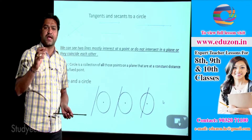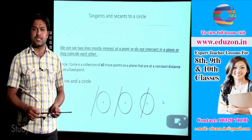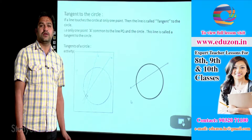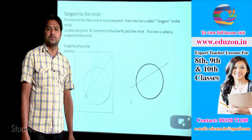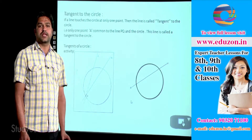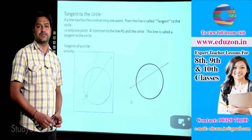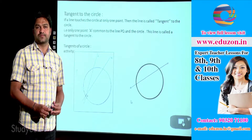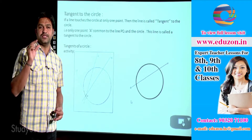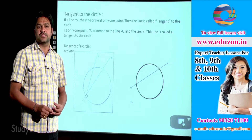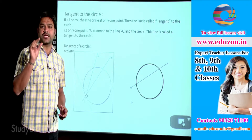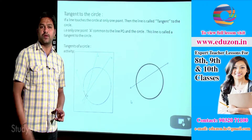So how do we draw tangents to a circle? A tangent is a line which touches the circle at only one point.